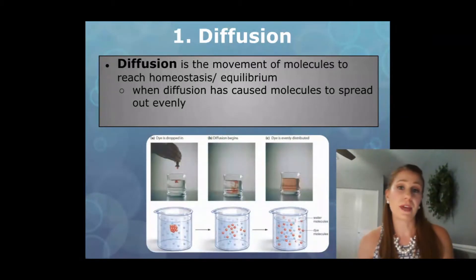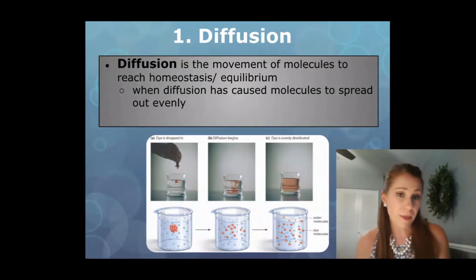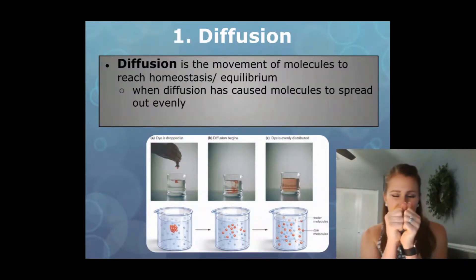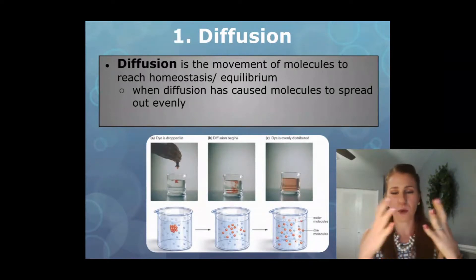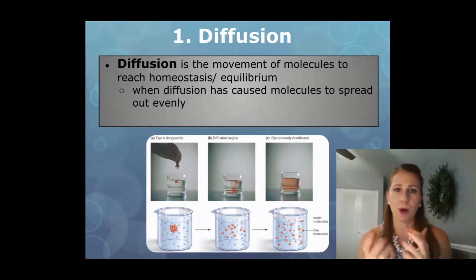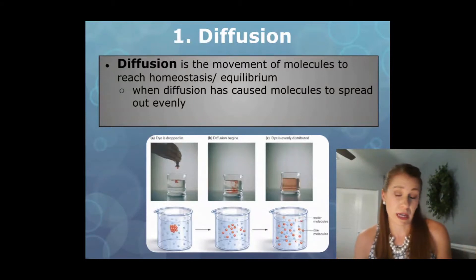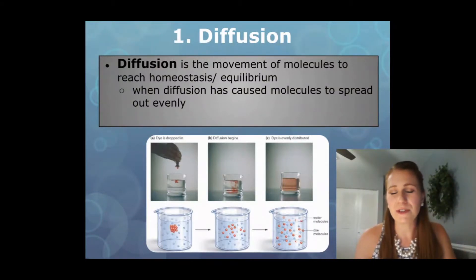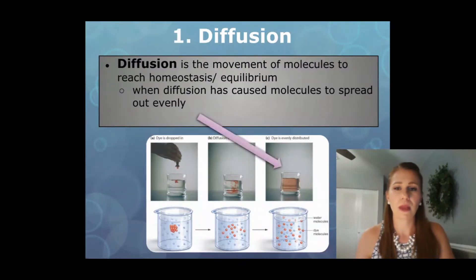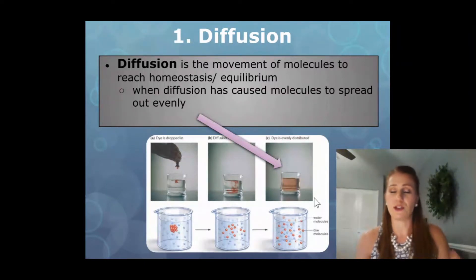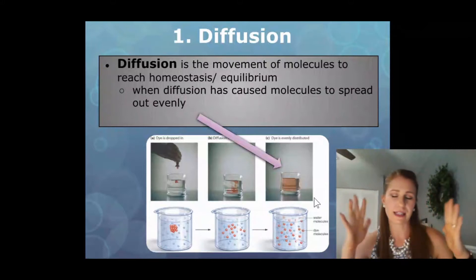We see diffusion when you drop something into water. If you take food coloring or some powdered drink mix, it's not going to just stay clumped up in one place. Eventually it will move through the whole liquid. Those colored molecules from the dye are going to spread out throughout that entire substance until it's evenly distributed — or it has reached equilibrium and homeostasis. We can tell homeostasis has been reached when there are no more globs; it's all nice and spread out, all equal.